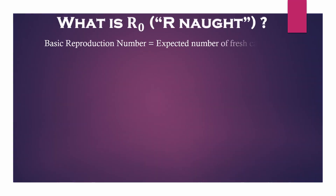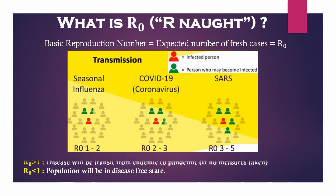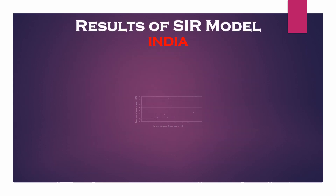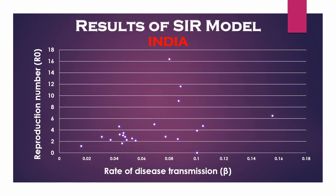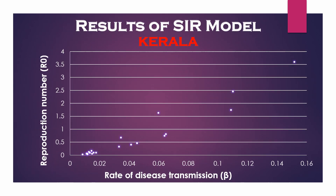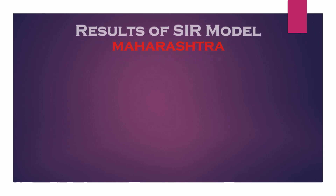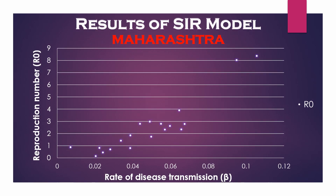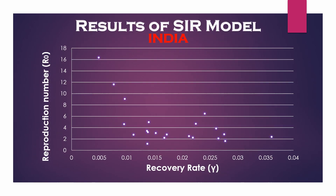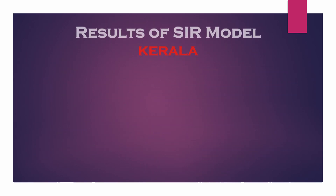Our objective is to calculate the expected number of fresh cases from a single infected individual. After analyzing data for India as a whole and Maharashtra and Kerala states separately, a steep spike in the number of cases for Maharashtra state can be observed.